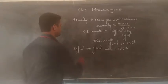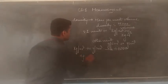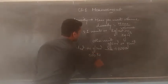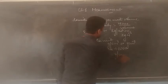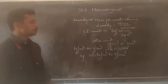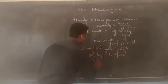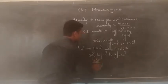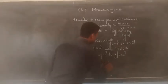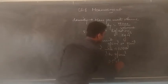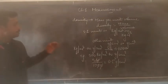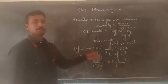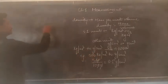For example, suppose we have to convert 500 kg per meter cube into gram per centimeter cube. In this case we have to divide by 1,000. Dividing by 1,000, we get the answer as 0.5 gram per centimeter cube.